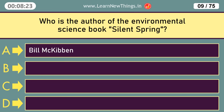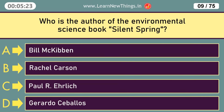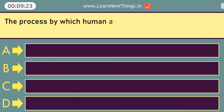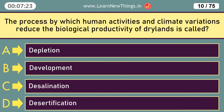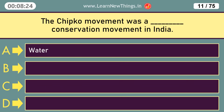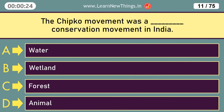Who is the author of the environmental science book Silent Spring? Rachel Carson. The process by which human activities and climate variations reduce the biological productivity of drylands is called Desertification. The Chipko Movement was a forest conservation movement in India.